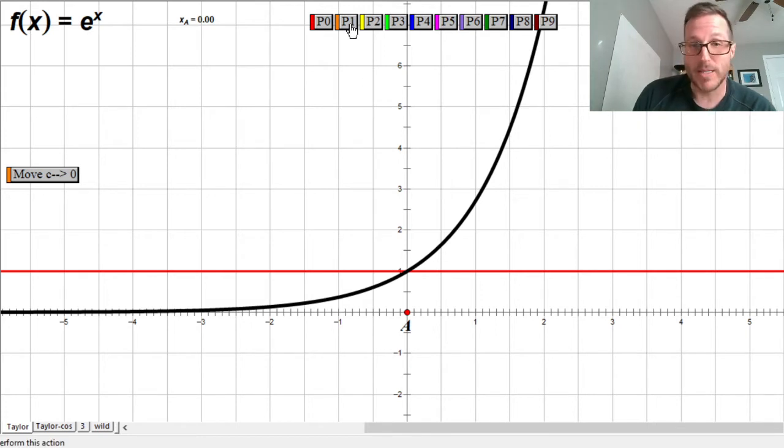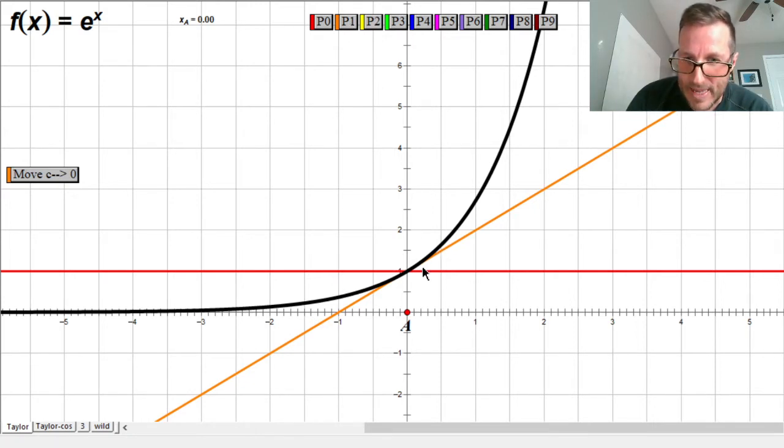Something that is better is to make a function whose value is the same and whose slope is the same. That would be a tangent line. Here is a tangent line to the function y equals e to the x at zero. It's the line x plus one. That you might notice there's less error a little bit further around zero, but there's still a bunch of error as you move away from zero.